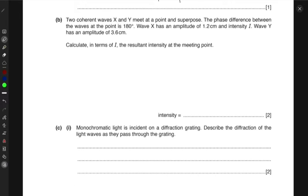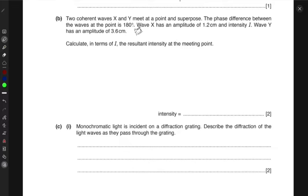Next, we have two coherent waves, X and Y. They meet at a point and superpose. The phase difference between the two waves at the point is 180 degrees. So the waves are opposite to each other at a point. The phase difference is a total flip of 180 degrees. Wave X has an amplitude of 1.2 centimeters and intensity I. Wave Y has an amplitude of 3.6 centimeters. Calculate in terms of I the resultant intensity at the meeting point.